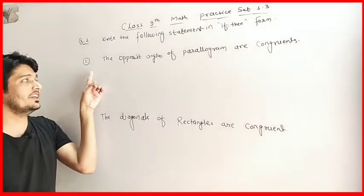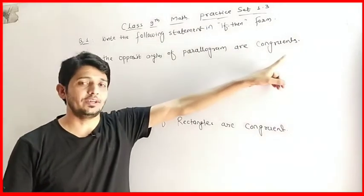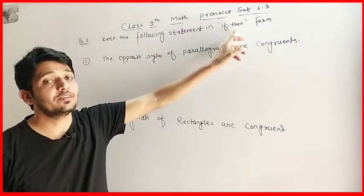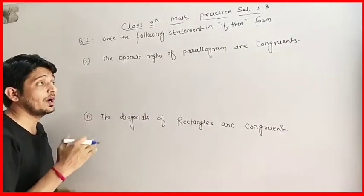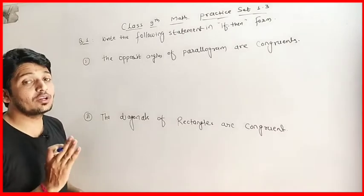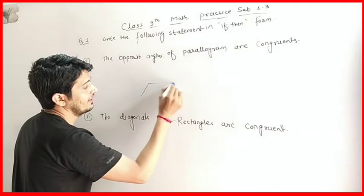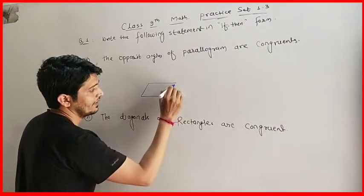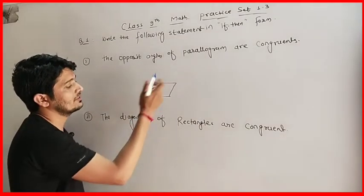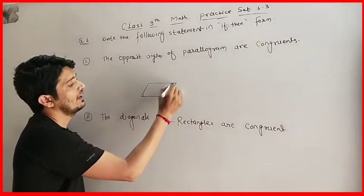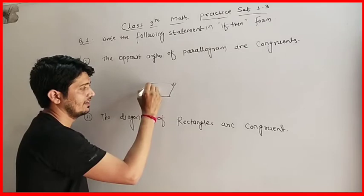The first statement says: the opposite angles of a parallelogram are congruent. Here we have to use if and then. We know what a parallelogram is — the opposite sides of a parallelogram are parallel to each other. These are the parallel lines, and this is our parallelogram. The question refers to the opposite angles — this angle and this angle — which are congruent.